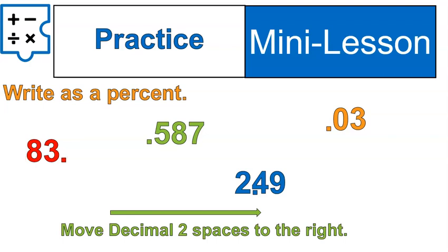Hey, welcome back. Was 0.83, did that become 83% for you? That's moving that decimal two places over. 0.587 becomes 58.7%. 0.03 becomes 3%. And 2.49 became 249%. When we're shifting that decimal, two spaces to the right.